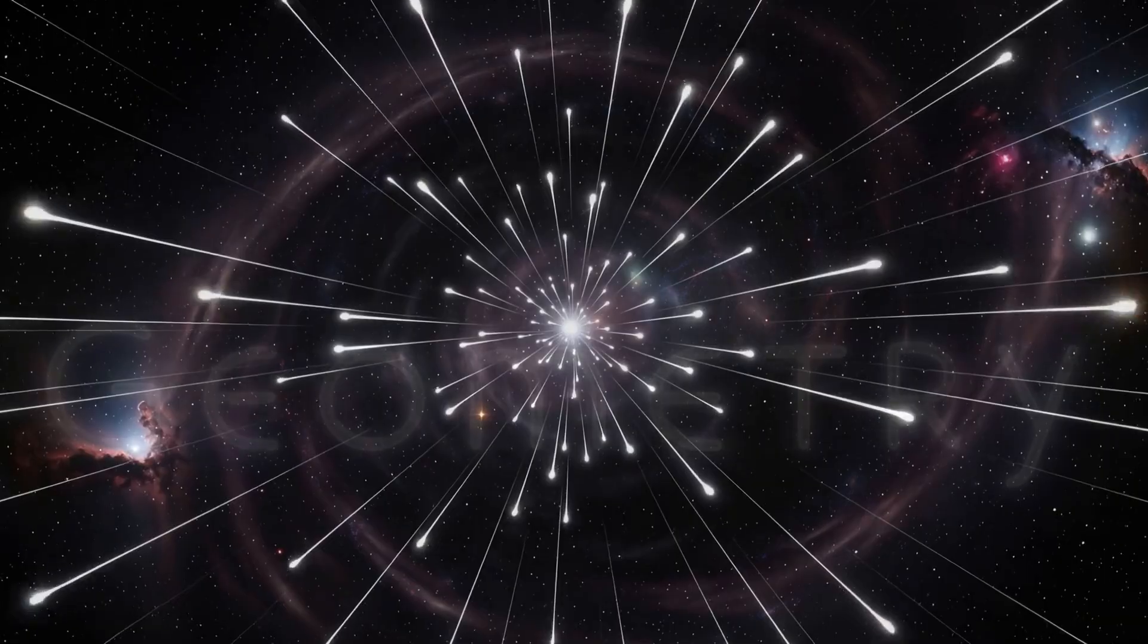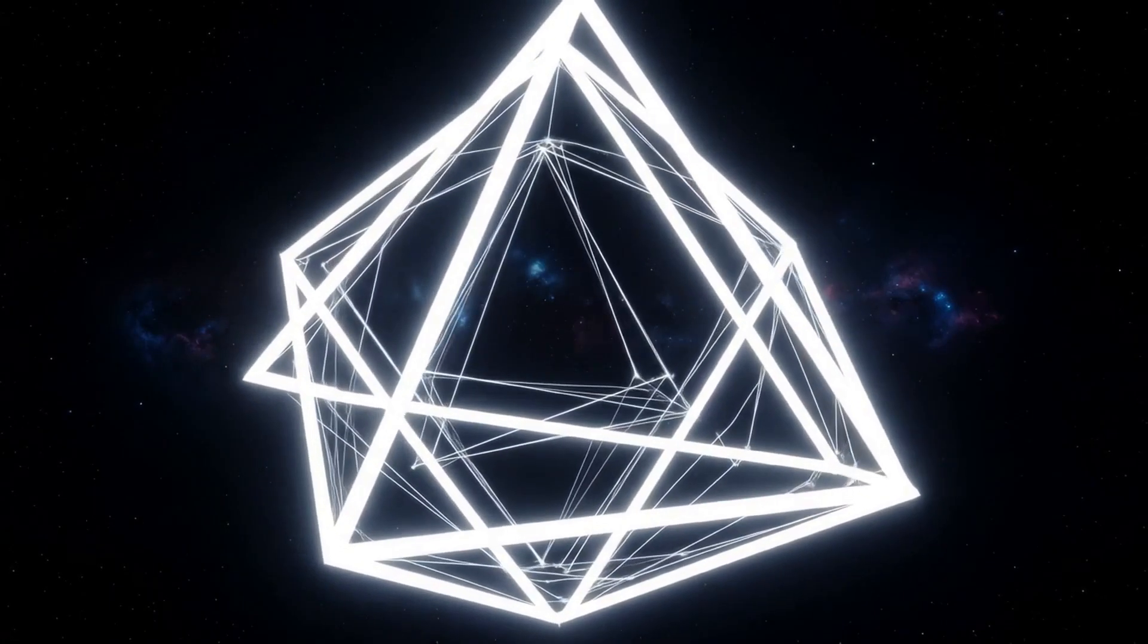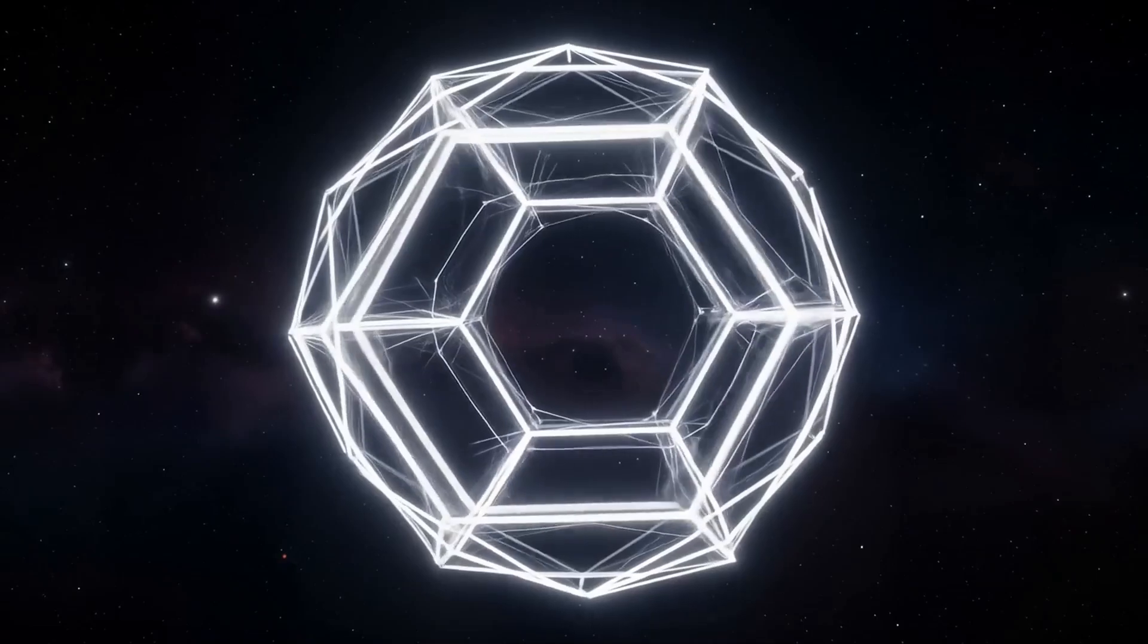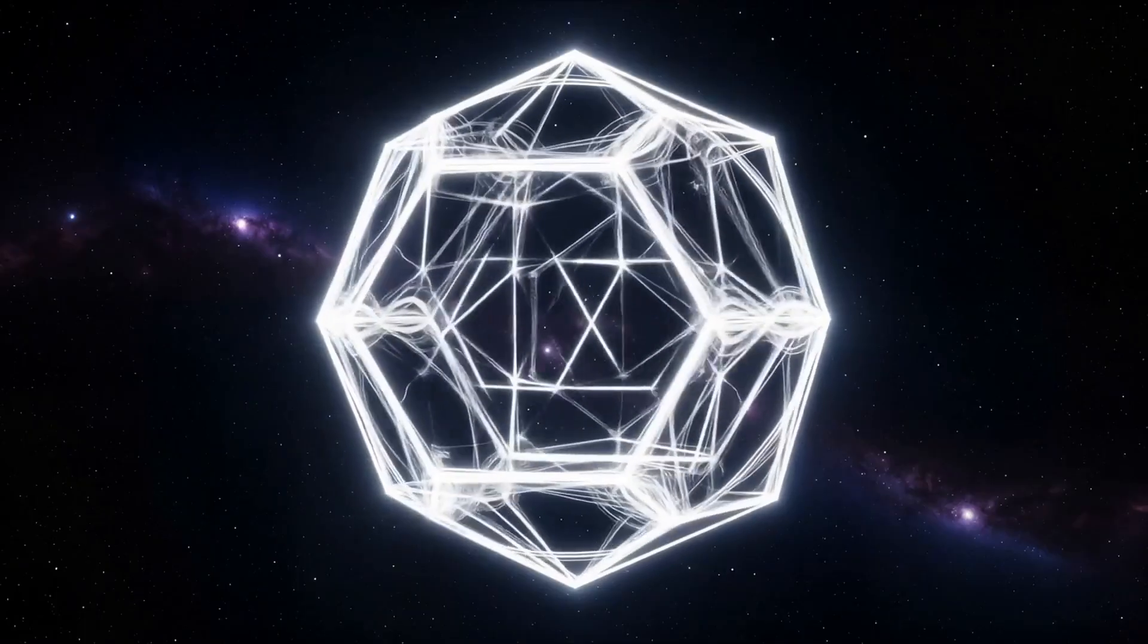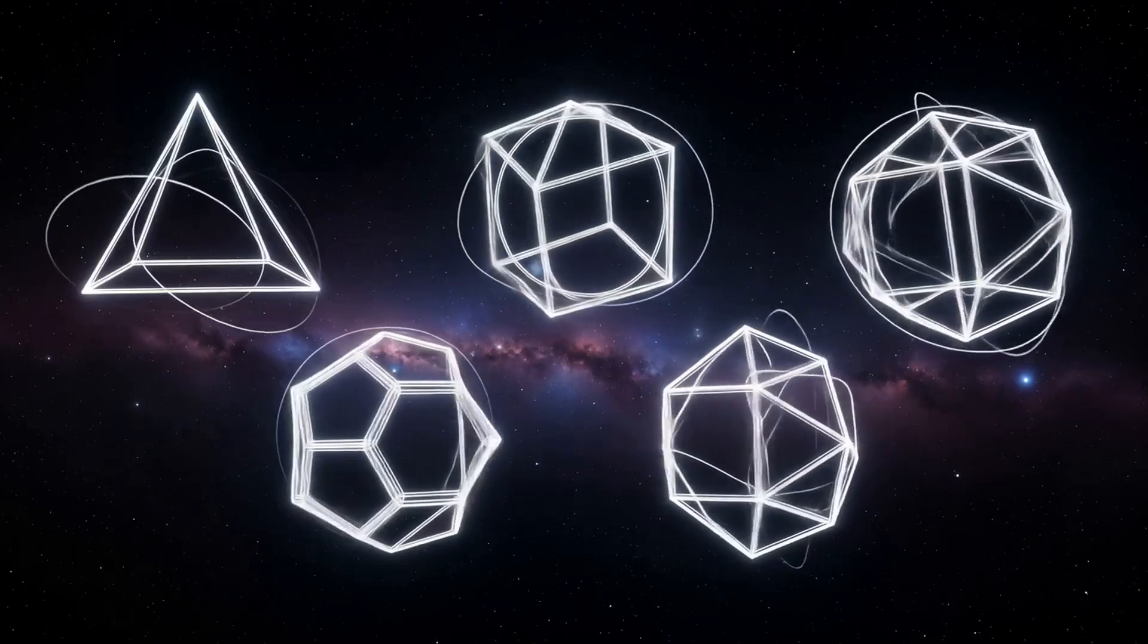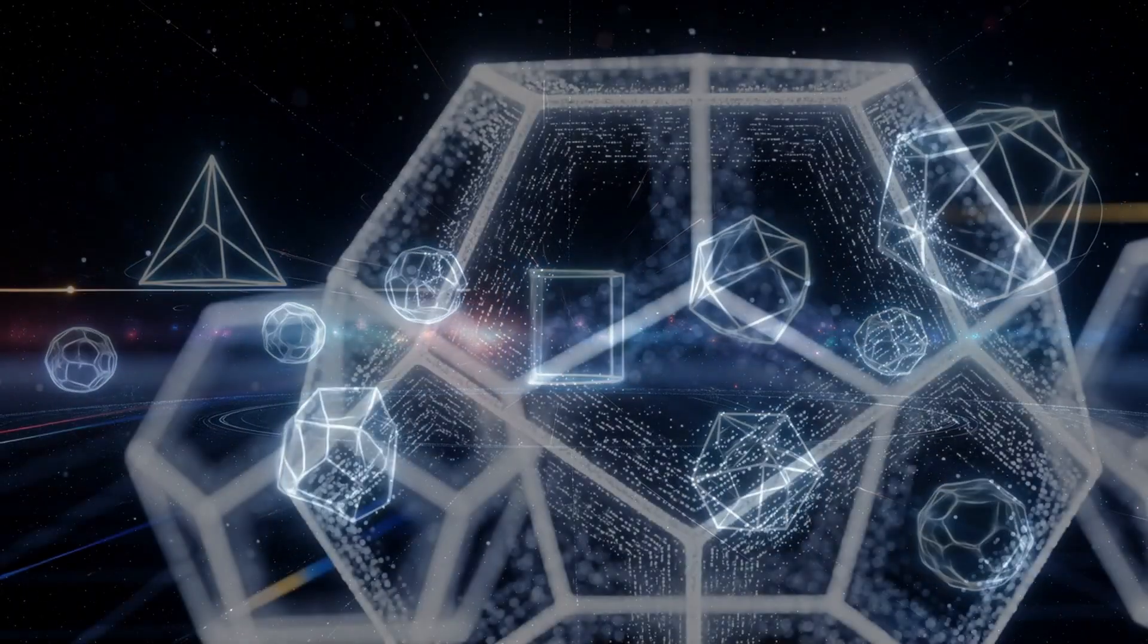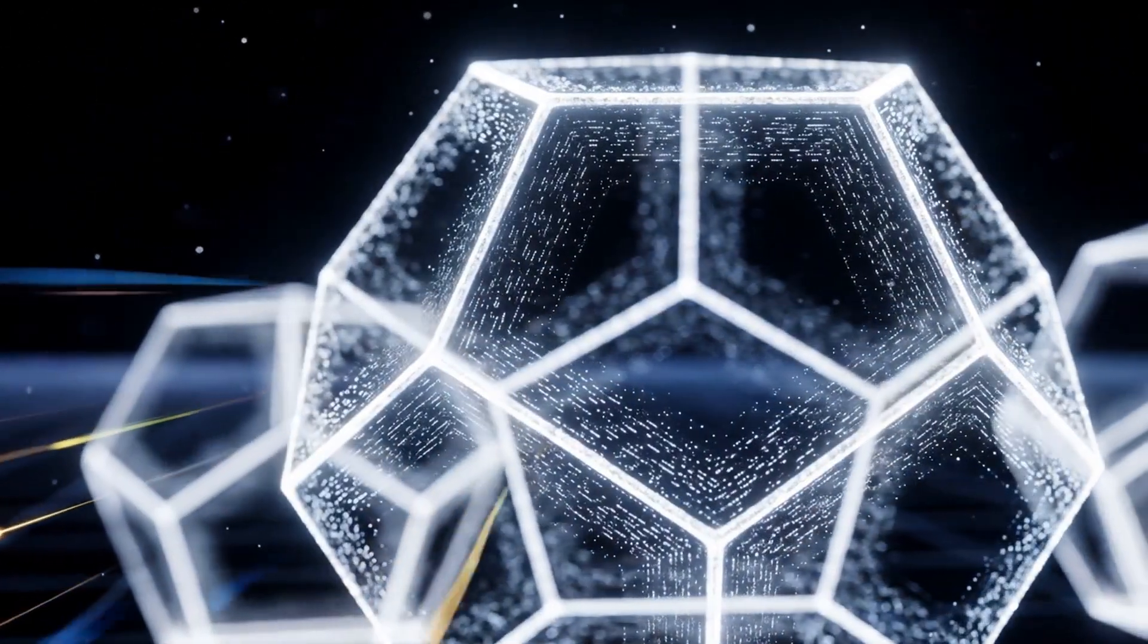The first stable forms to appear were the platonic solids, five perfect shapes born not from matter but from the harmony of light's spin. The tetrahedron, the cube, the octahedron, the dodecahedron, the icosahedron—each one a crystallized memory of coherence etched into the horizon of qubits by the singularity's entangled light.